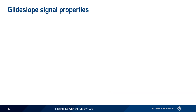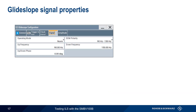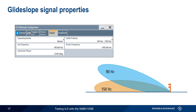The glide slope signal properties work the same way as they do for localizer. They allow you to change the frequency of the two lobes, turn one of the lobes off, and change the phase difference between the lobes, as well as define the DDM polarity. These are completely analogous to the signal parameters for localizer.